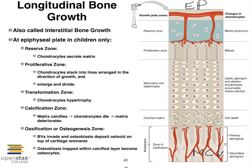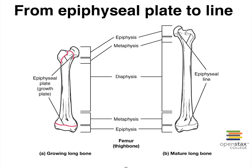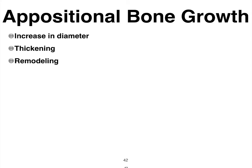You have already learned about appositional bone growth when we studied both intramembranous and endochondral ossification. As this figure shows, eventually the epiphyseal plate will be completely replaced with bone tissue, and we end up with an epiphyseal line. Once there's an epiphyseal line, we have reached the end of longitudinal bone growth. When bones increase in diameter, they thicken by depositing osteoid onto existing bone tissue or an existing structure — we refer to that as appositional bone growth.